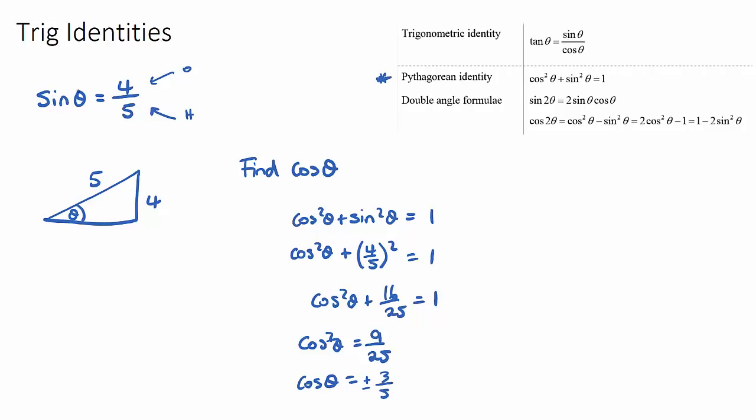We can do the opposite. If we are given cos, we can find sine. And hopefully, if this name now makes sense, because the Pythagorean identity relates to Pythagoras. Pythagoras means that formula would have helped us find this adjacent length. It just would have been 3, because this is a 3, 4, 5 triangle.